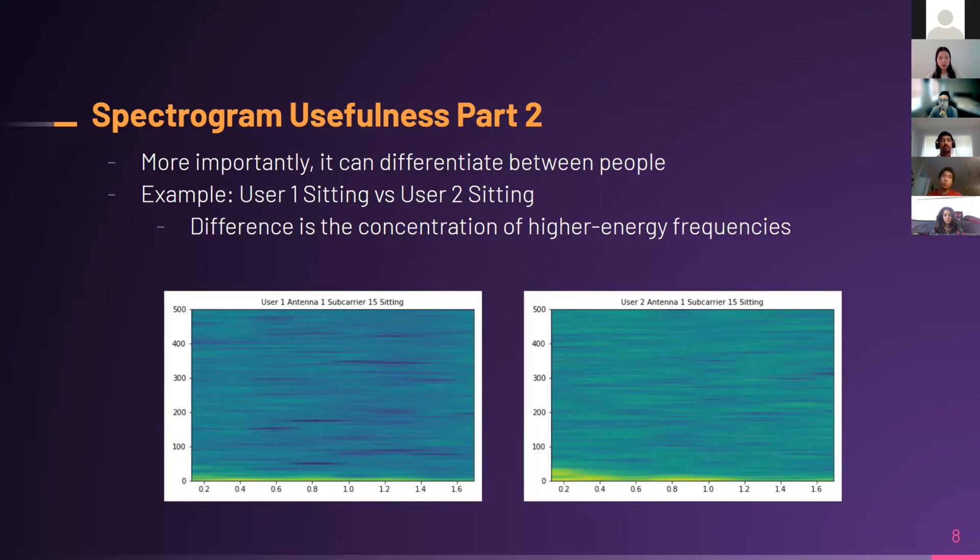More importantly, the spectrograms can help us differentiate between people, which is key to the idea of mobile user authentication. This ultimately allows the spectrograms to be used as input for training our deep learning model. Here again, the images below show the difference between user one sitting versus user two sitting. The difference is the concentration of higher energy frequencies. We can see that there are more high-range frequencies in user two than user one.